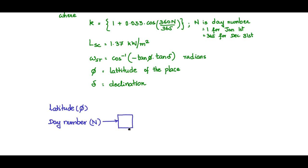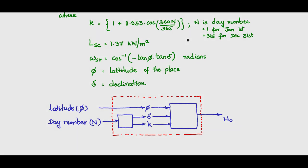From the day number, we can get δ declination and the constant K using this relationship. Knowing φ as one of the inputs, these three will be given to the model for estimating the energy and you will get H₀ in kilowatt hours per meter squared per day. This whole block algorithmically can be considered as the energy determining module for a horizontal flat plate.